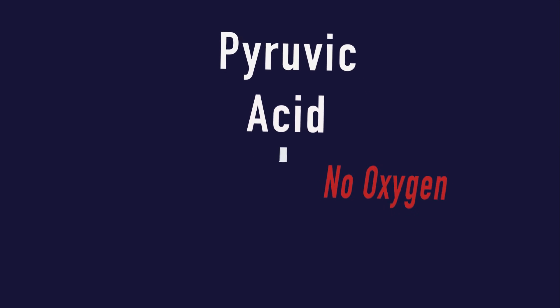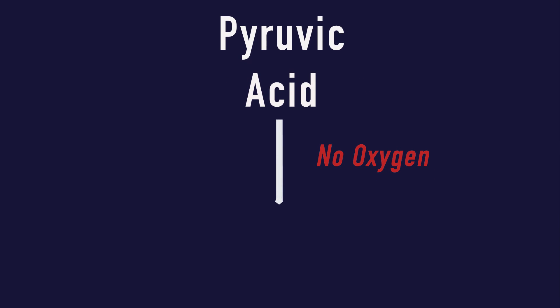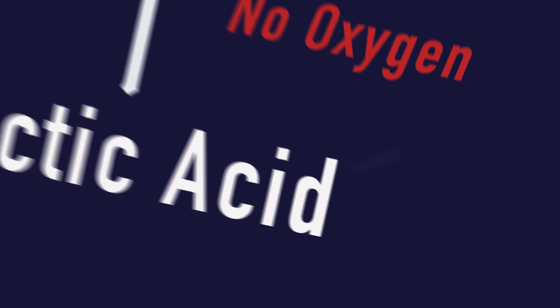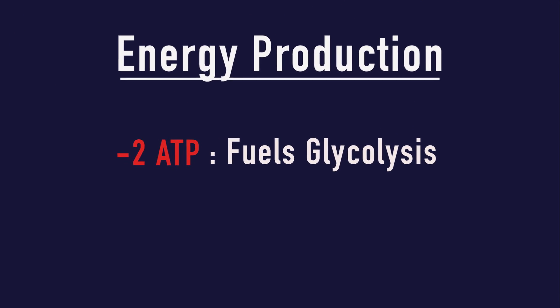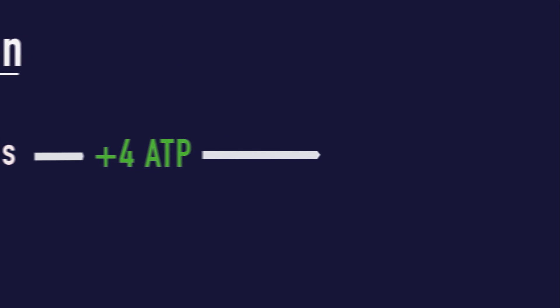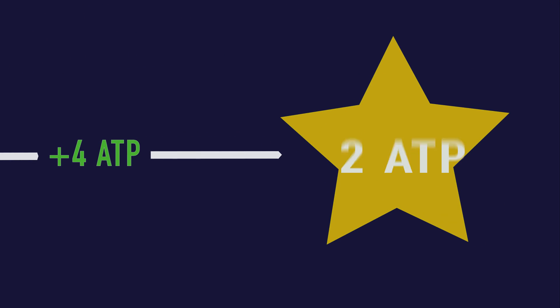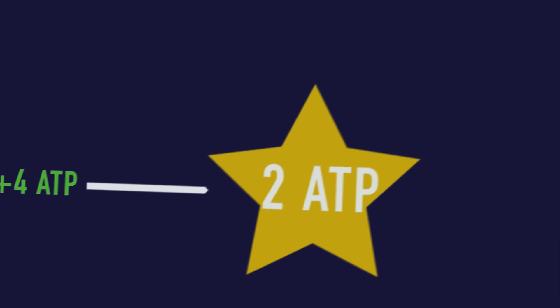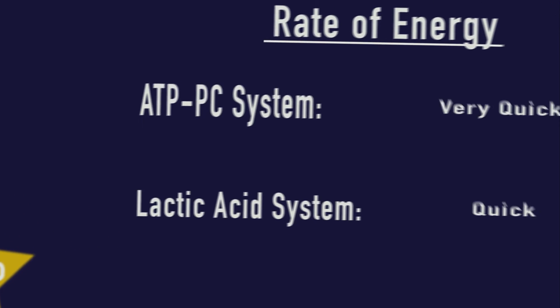The absence of oxygen also means that the pyruvic acid cannot be broken down, leading to the production of lactic acid. It takes two ATP to fuel glycolysis, but the end result generates four ATP, giving a total yield of two ATP of energy, which is double what you get from the ATP-PC system.